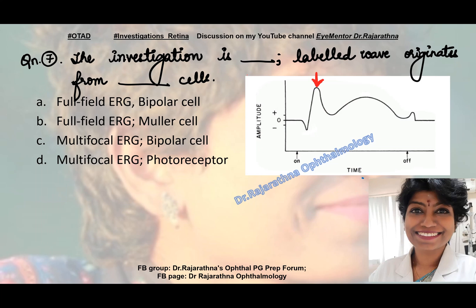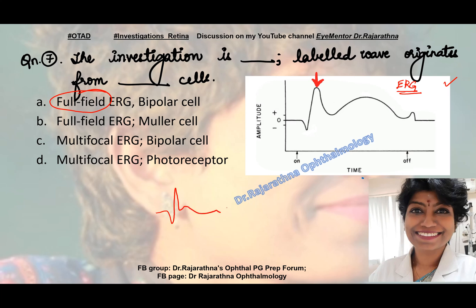Question number 7: the labeled wave originates from which cells? This is an ERG as all of you would have known. Now there is a little dilemma — there is a full field ERG and there is a multifocal ERG. Multifocal ERG tests multiple points on the retina and you will have multiple ERG waveforms. In full field ERG, it's a summation of the entire retina and you get only one wave — whether it's photopic, scotopic, or flicker — but you will get only a single output.